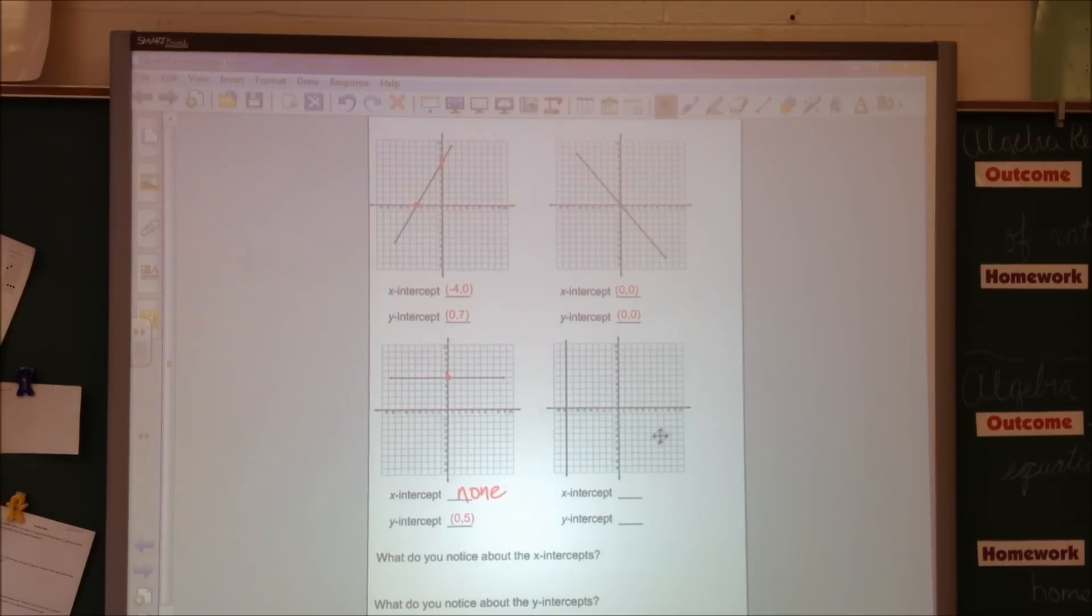And for our last graph, our x-intercept is right there, which is at point of 8, 0. And our y-intercept, there isn't one. This line does not cross the y-axis. So we're going to write down none.